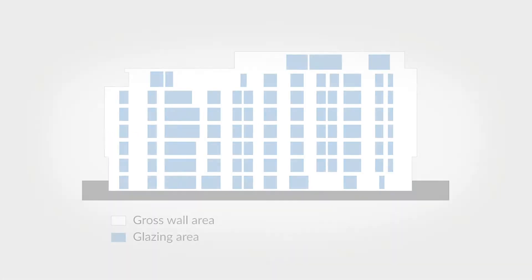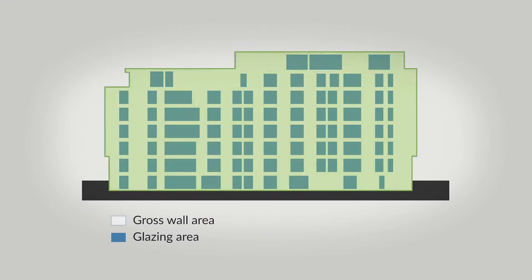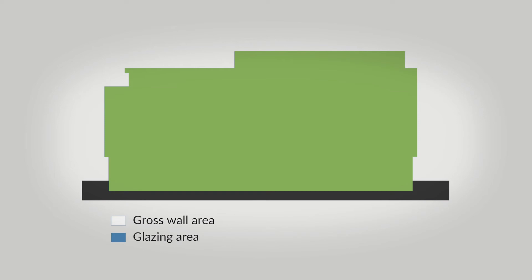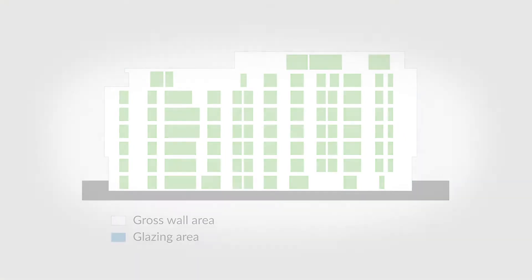The gross exterior wall area is the sum of the area of exterior facades. This includes walls, windows, and doors. The total glazing area is the sum of the glazed area in the exterior walls, including the frames. The glazed area is any opening covered with glass, including windows, doors, and curtain walls.